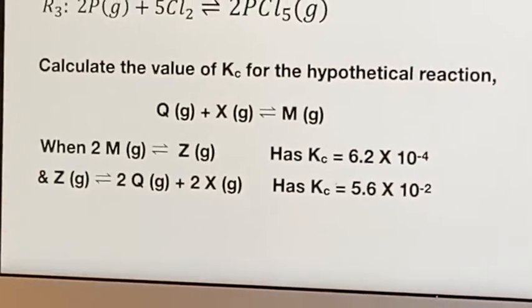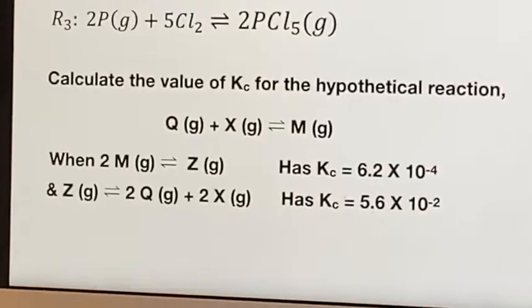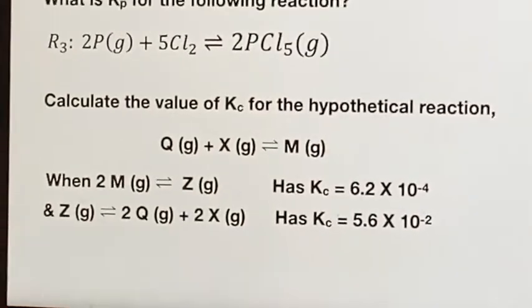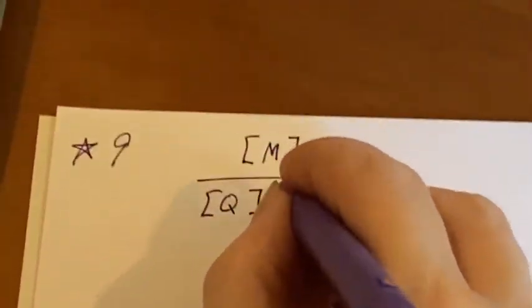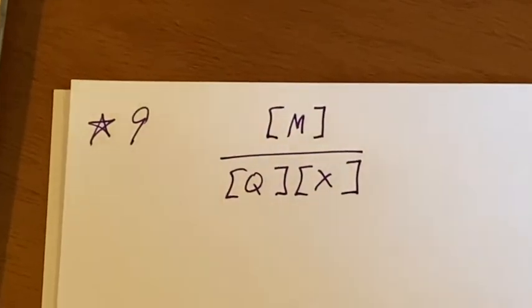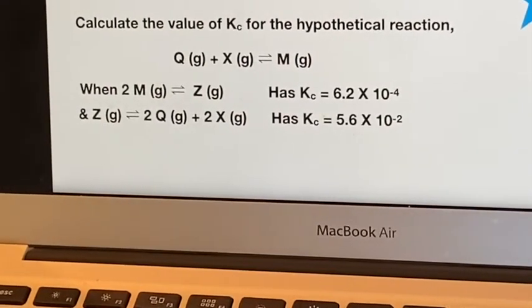On number nine, it's a hypothetical one. I would like it to be M over Q and X, which is the product. But that is not what they've given me at all. Let's see if I can find some way to get there.